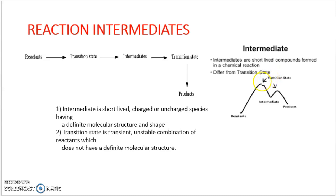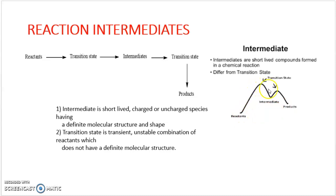This peak is called the transition state. After this step there is a gradual decrease in energy, and a stable state occurs — that stable state is called the intermediate. Again the energy increases and then falls down to form the product. So reactants are converted into products via transition state and intermediate.